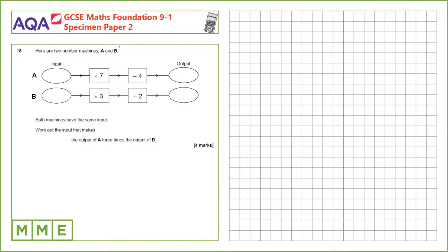If we're using the same input and we want to find that input, let's use an unknown, so we'll call it x. Let's figure out what the output is for each of these. The output for a is x times 7, so that's 7x, minus 4.